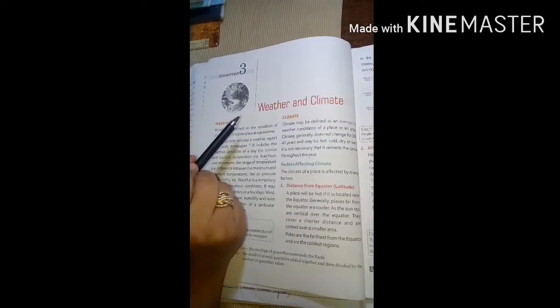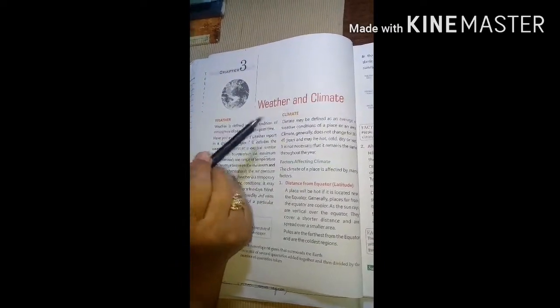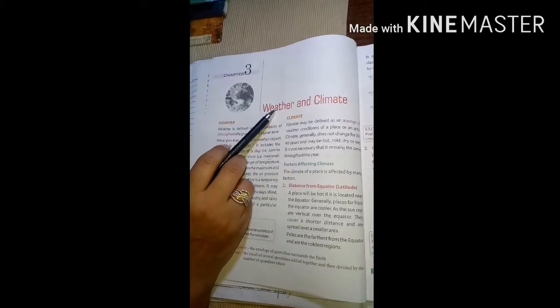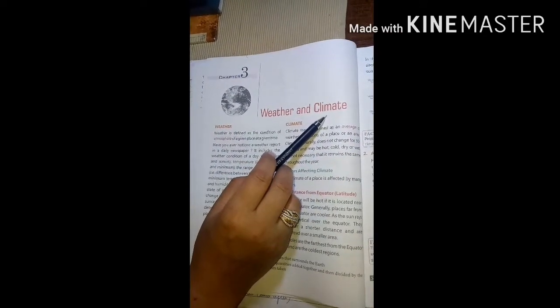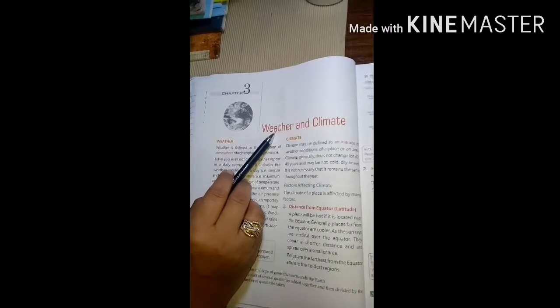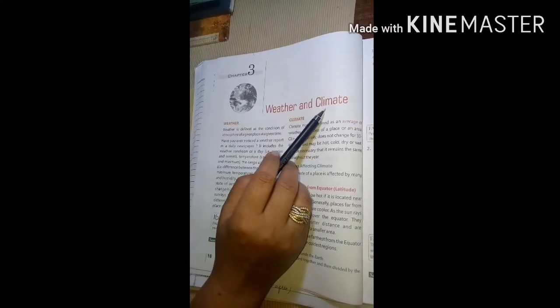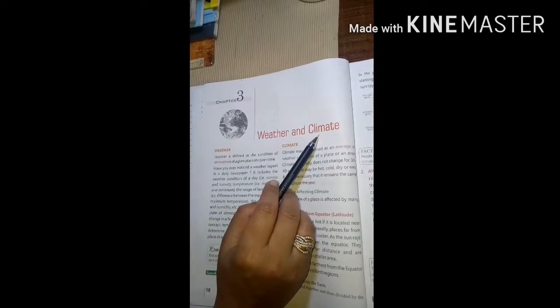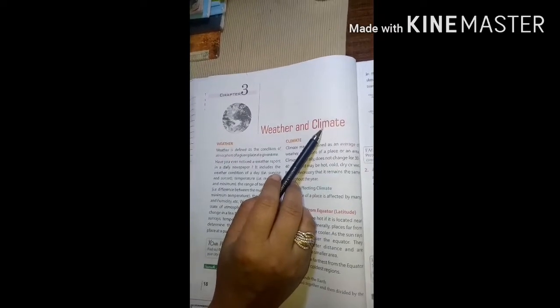By now we are aware of what weather and climate is. Weather reflects short-term condition of temperature, whereas climate reflects long-term condition of temperature. Weather changes quickly, it fluctuates, whereas climate remains same over a long period of time in a specific area.